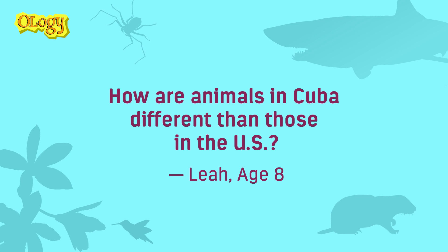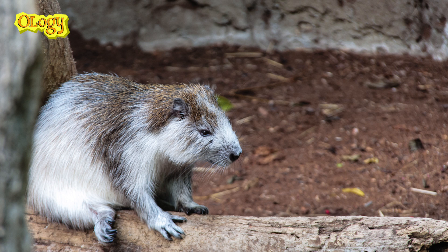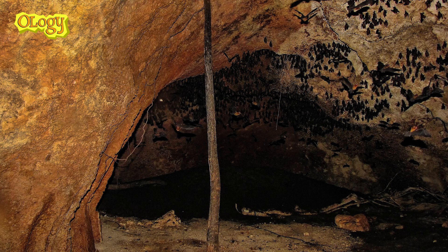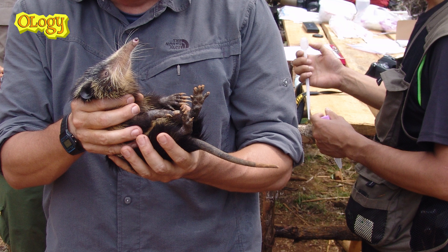How are animals in Cuba different from those in the US? Cuba is very different from the US — it's an island, not a continent, and it's in a tropical region, whereas the US has temperate and subtemperate regions. So they have very different animals. Some mammals you see in the US, like wolves, deer, and bears, you don't see in Cuba. But Cuba has other really interesting mammals: hutias, which are arboreal tree-dwelling rodents that can get very large; bats that live in very hot caves; and a very interesting insectivore called a solenodon, which is related to hedgehogs and has poisonous saliva.